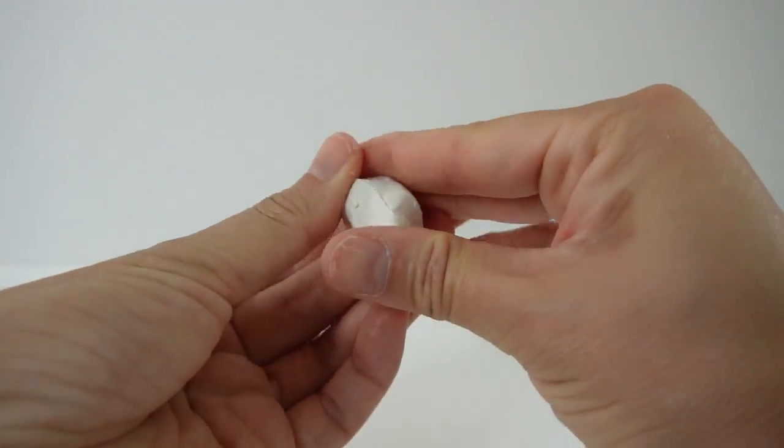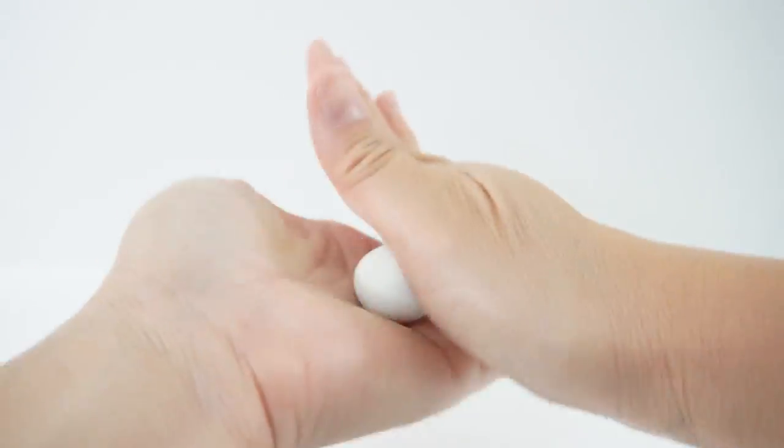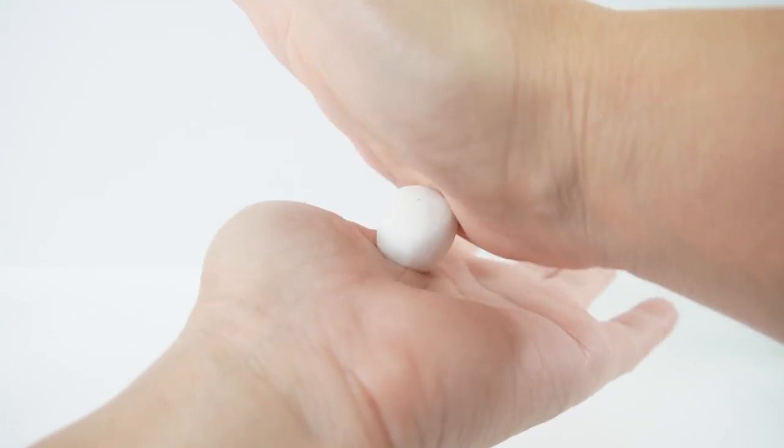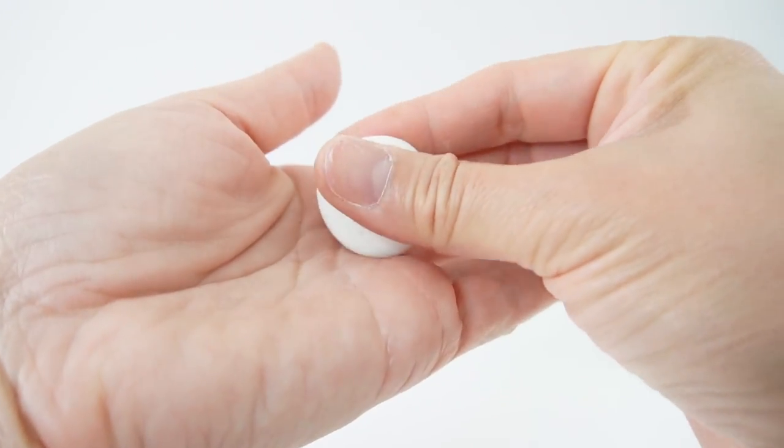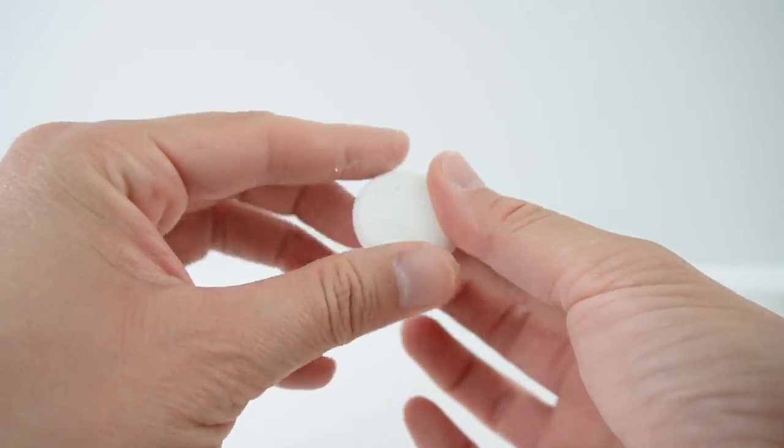I'm going to take this clay and roll it into a ball. Once it's nice and round, we're going to press it between the palms and smooth out the edges.